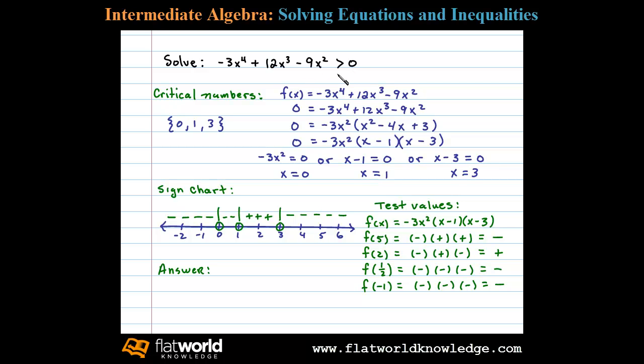So from the sign chart, we can see that the x values between 1 and 3 result in positive values. And so the answer is all the x values between 1 and 3.